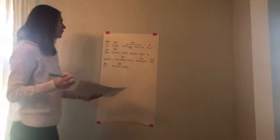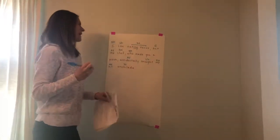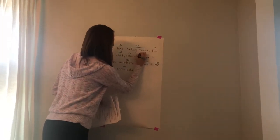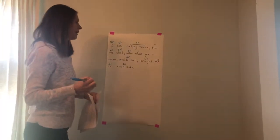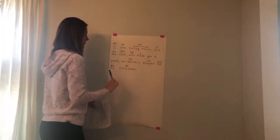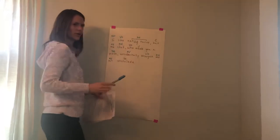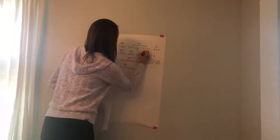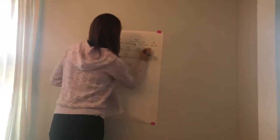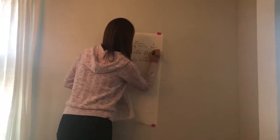Who made you a pizza? 'Who' — subject pronoun. What is being said about who? Made — verb. Made who or what? Pizza. Does pizza rename who? No — direct object, which makes our verb transitive. Who is receiving the pizza, who is the pizza made for? You — indirect object. And which pizza? A pizza — 'a' is an article adjective.